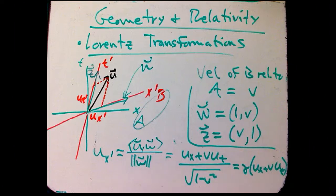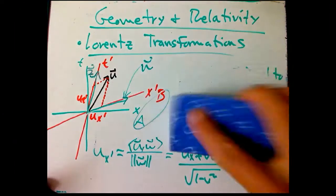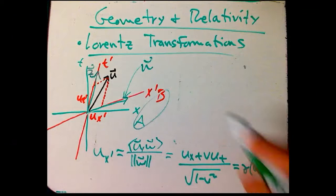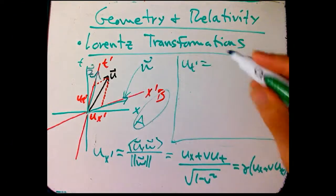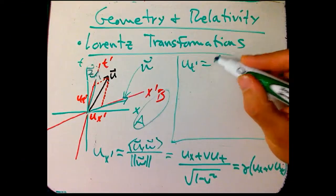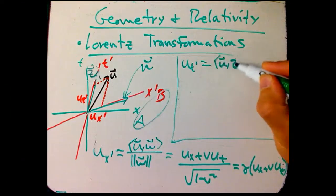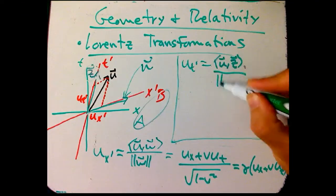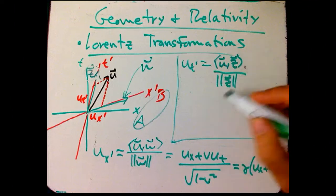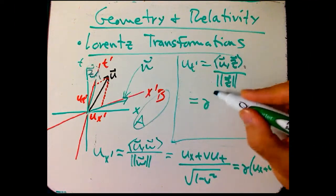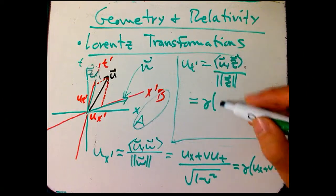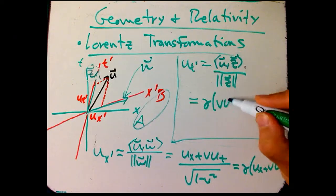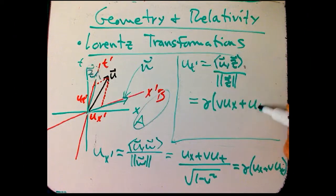Not too surprising to see the gamma factor come in there. And then UT prime is the same thing, but with projecting on Z. So it's just inner product of U with Z over magnitude of Z. Magnitude of Z is still gamma. And so we just get gamma. The magnitude of this, the dot product, the V is just going to appear in a different place. V UX plus UT.